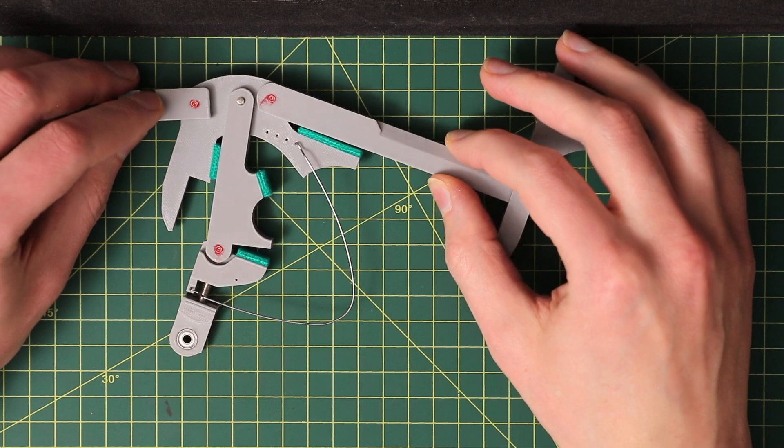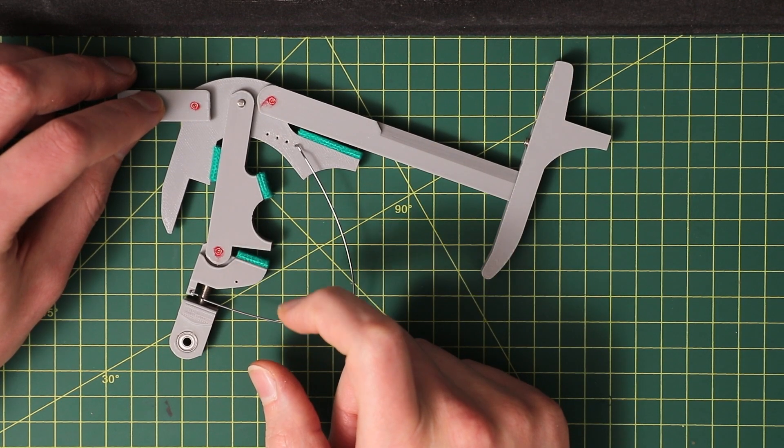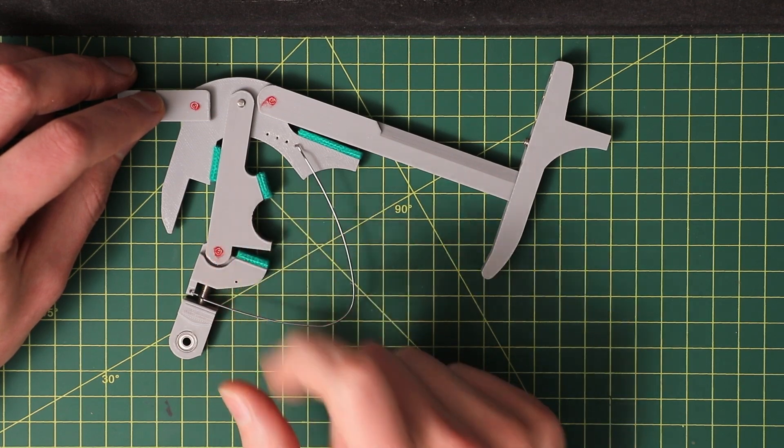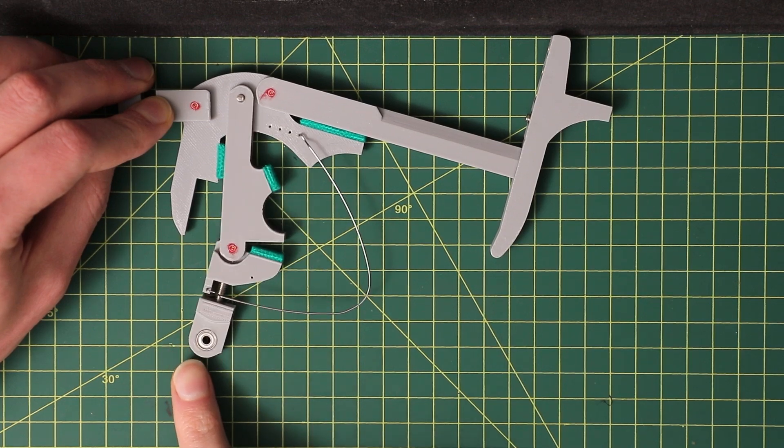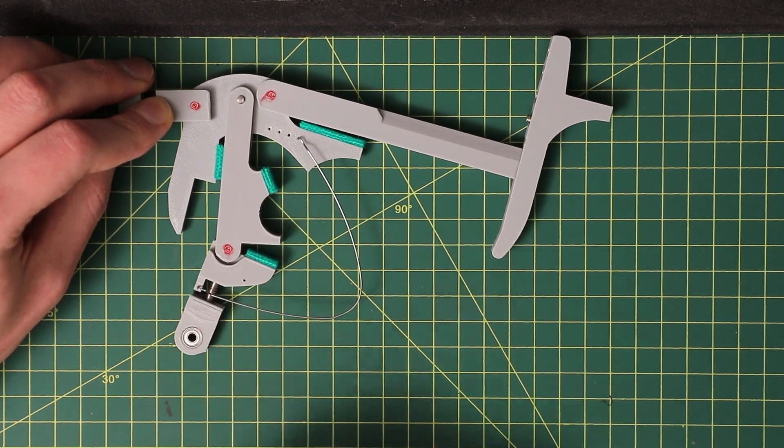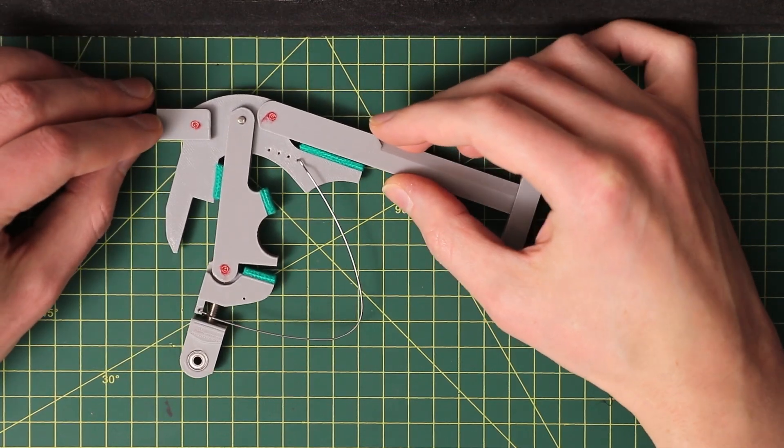But hold on I hear you say the two parts of the jack don't look like they're being pushed closed. And in fact they seem quite open. And you're absolutely right. When taken out of the piano like this the spring pushes the jack to be just a tad open aka buckled.